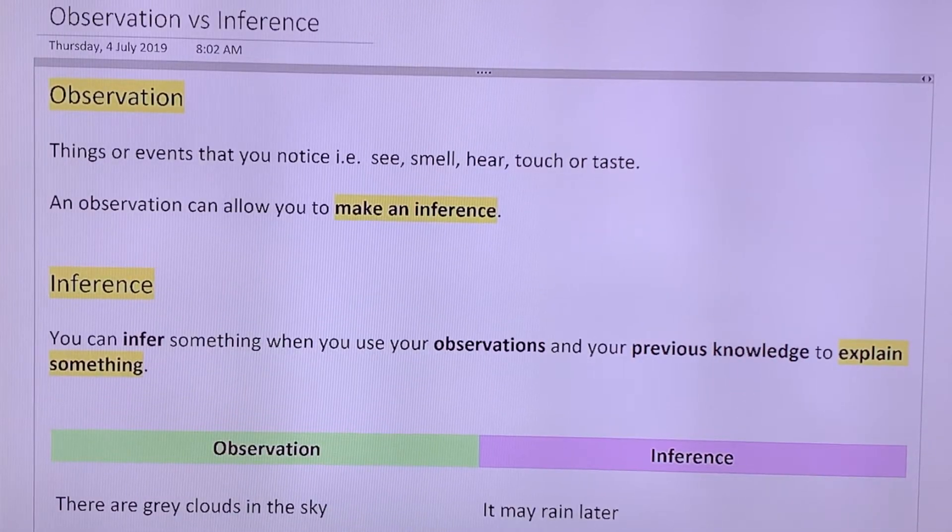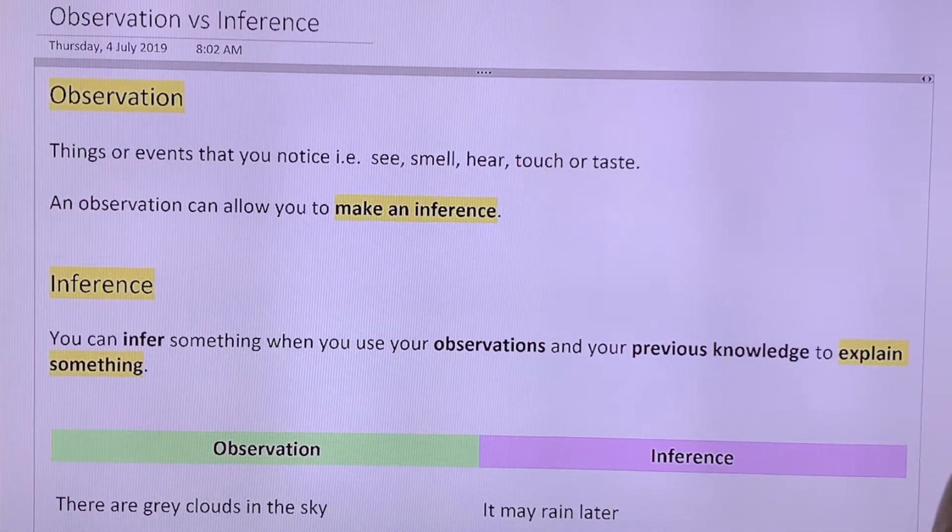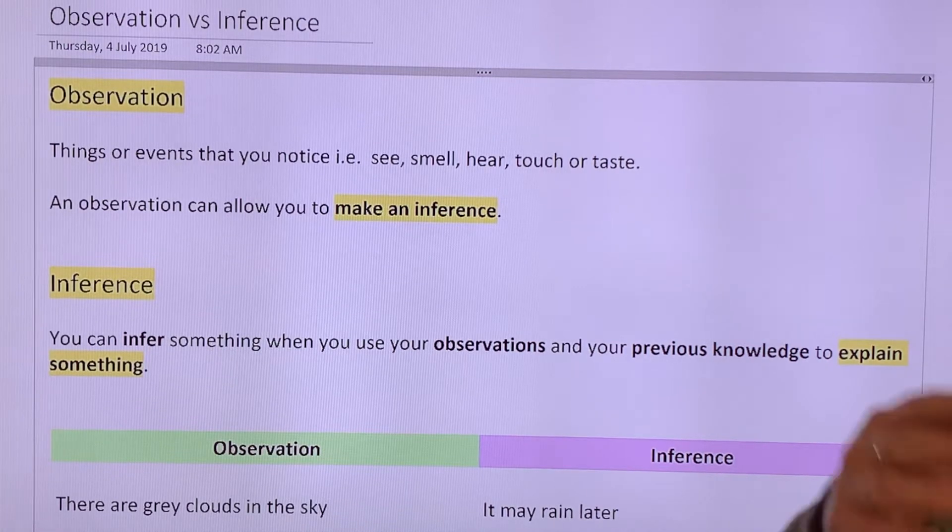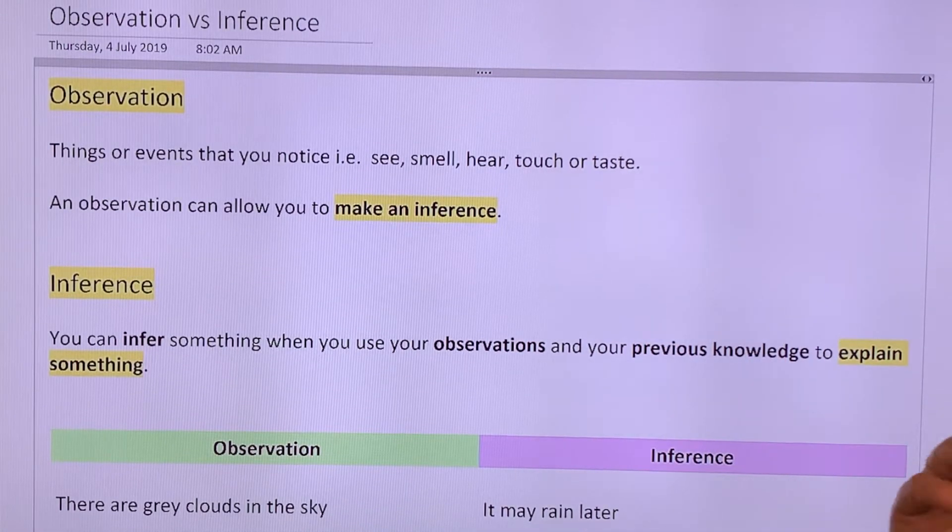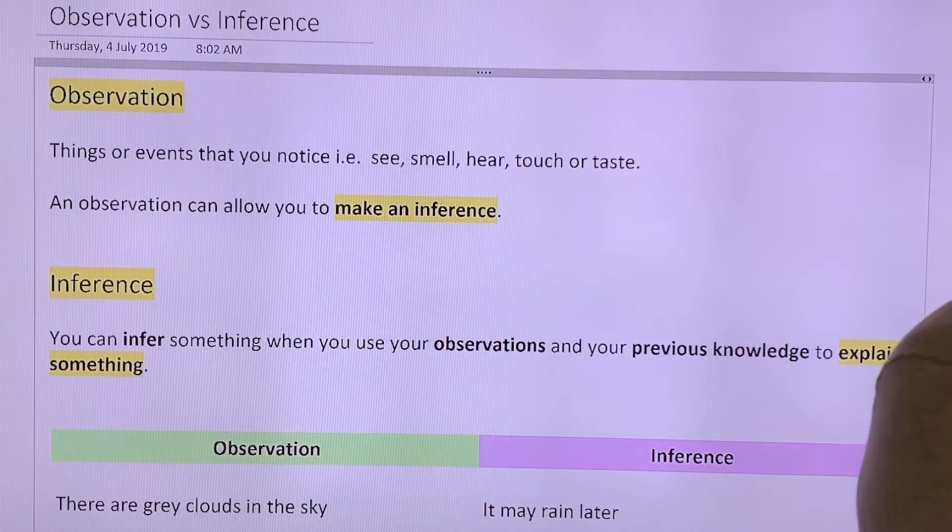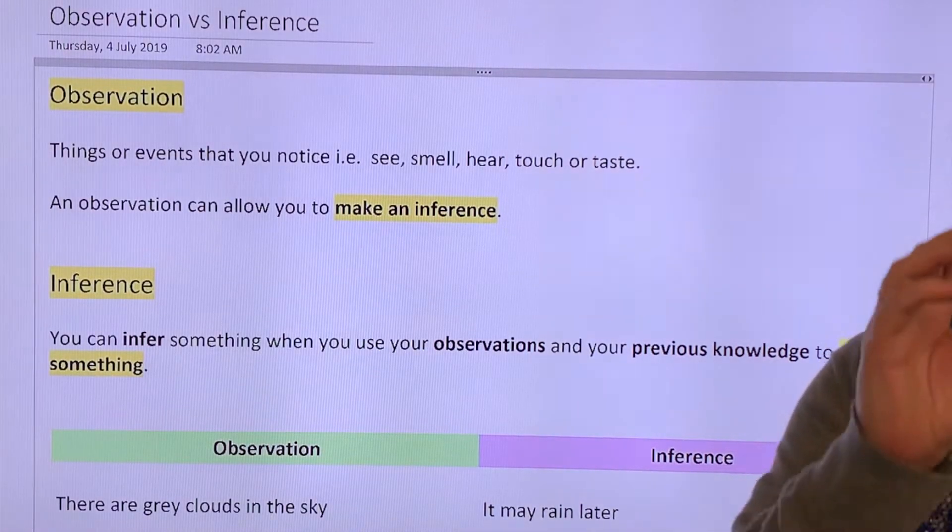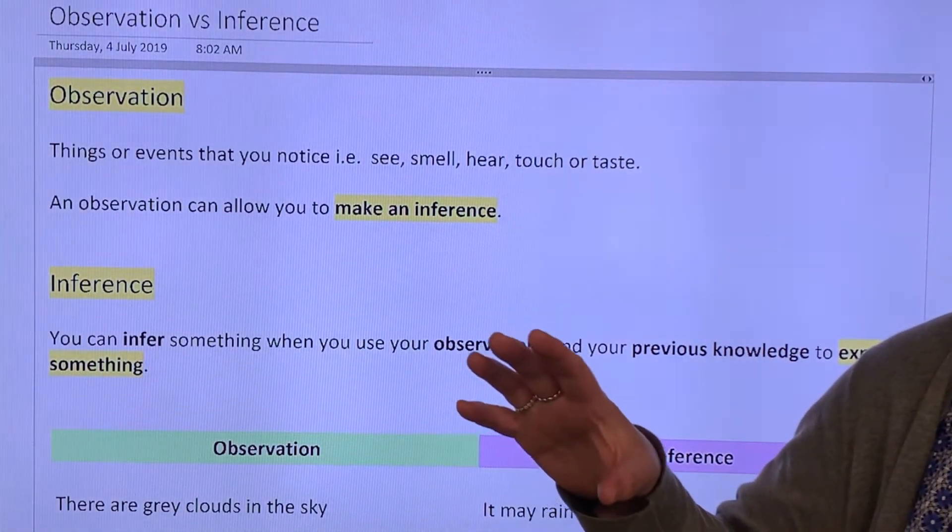All right, so we've been talking about classification: plants, animals, bacteria. Remember we talked about protists, which are unicellular organisms, single cells. And there's five different kingdoms that we're going to look at.